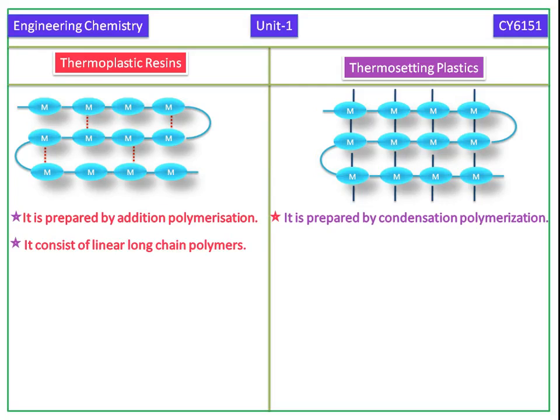Thermoplastics are linear long chain polymers. Thermosetting plastics are three dimensional network structure.